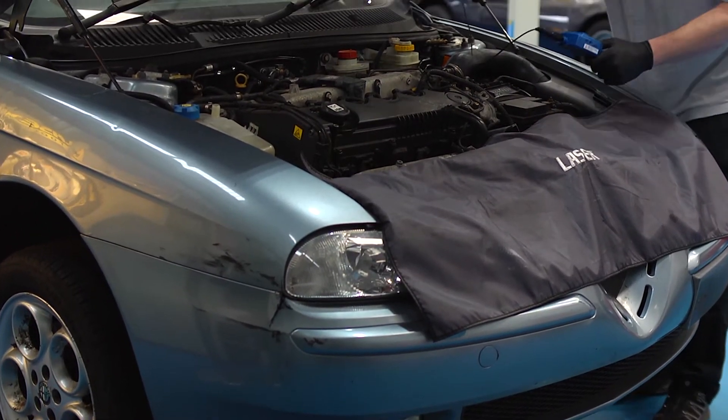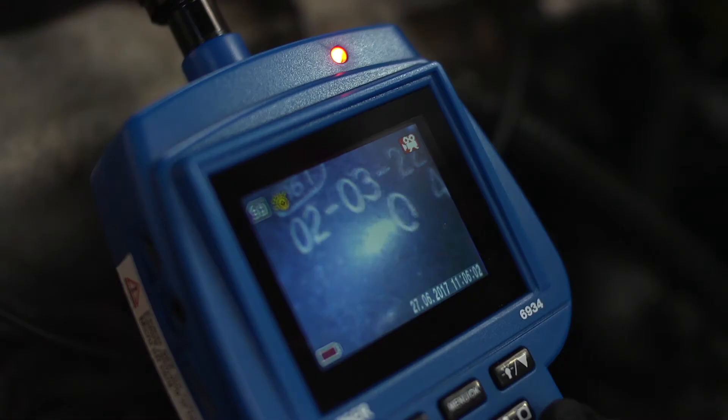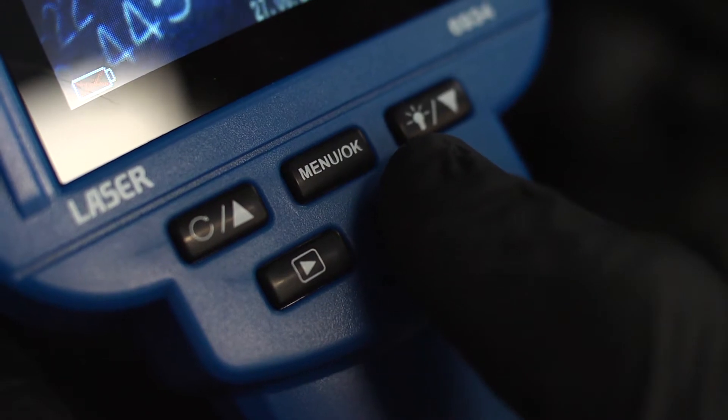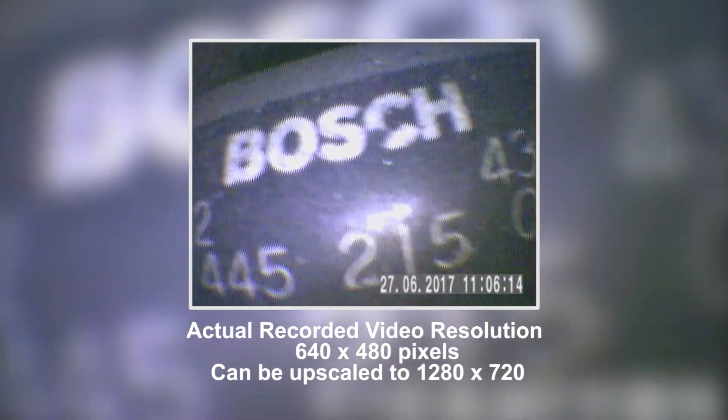Now let's put the inspection camera through its paces. Here we're going deep into an engine bay to find a part number on a component behind the engine. We will make a video recording so that the number can easily be read off later.